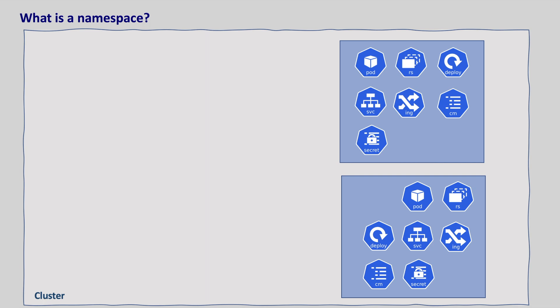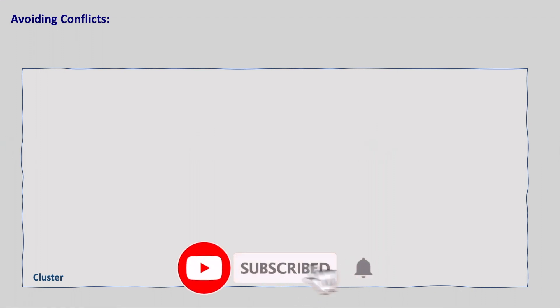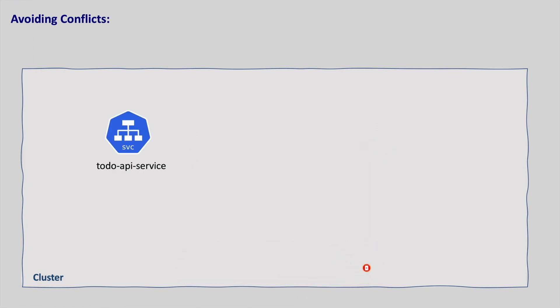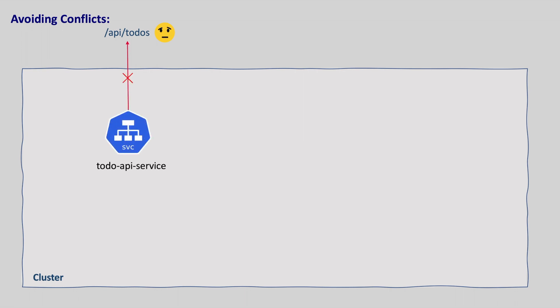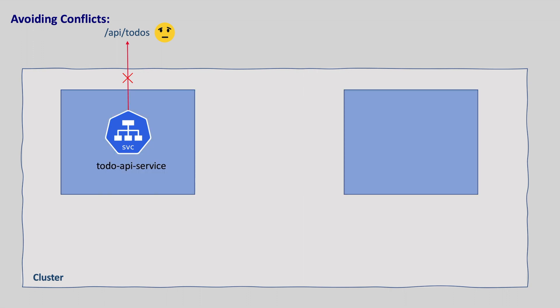Any number of namespaces are supported within a cluster, and each namespace is logically separated from others but they can communicate with each other. Let us see when we need namespaces. Let's say we define our service with the name 'todo-api-service' and it's working perfectly fine. But if someone else also uses the same name for their services, our service gets overridden and our application breaks. This is because we cannot use the same name for two different resources in a single namespace. If we have separate namespaces, then we can have the same name for two different resources in different namespaces, so teams can reuse the same resource names without any problem.